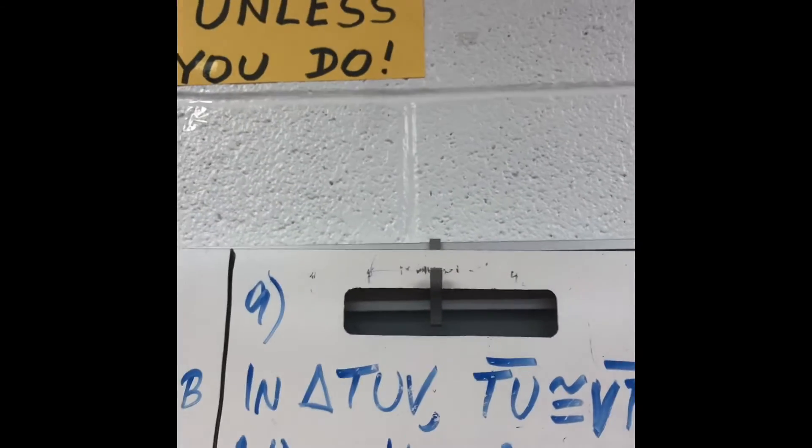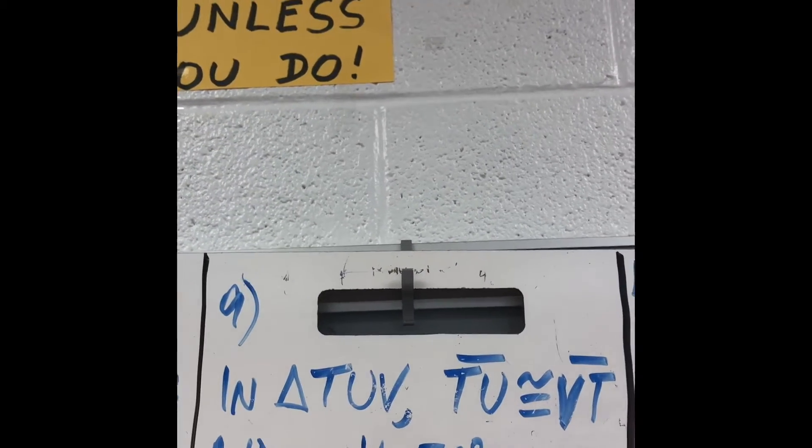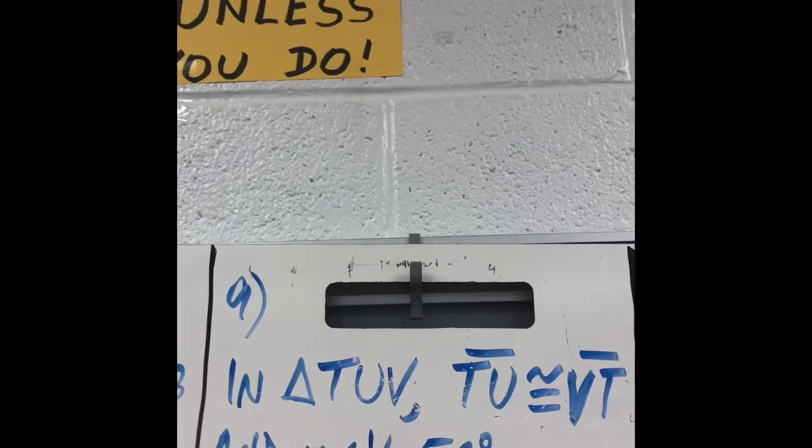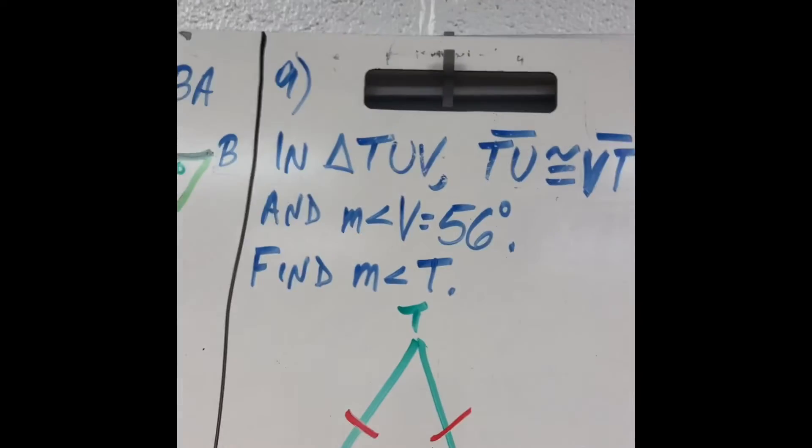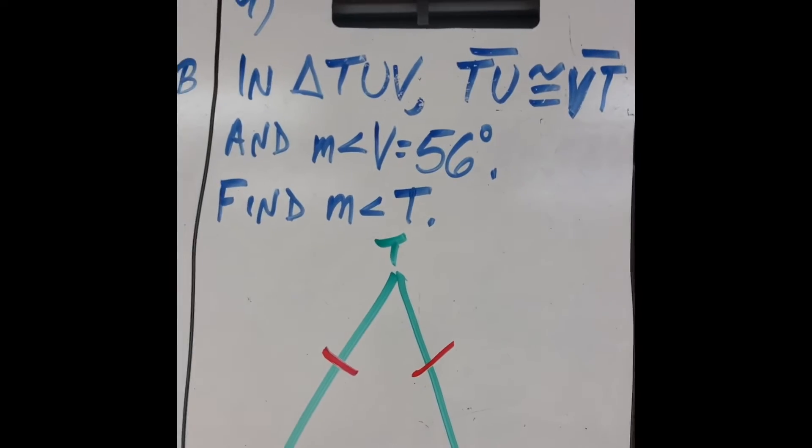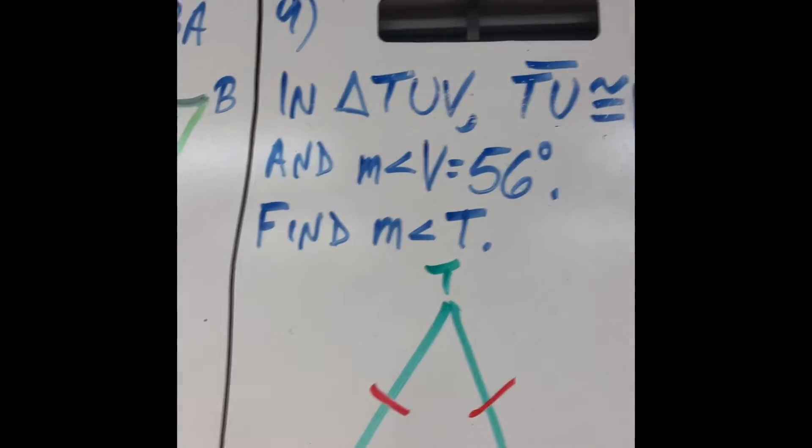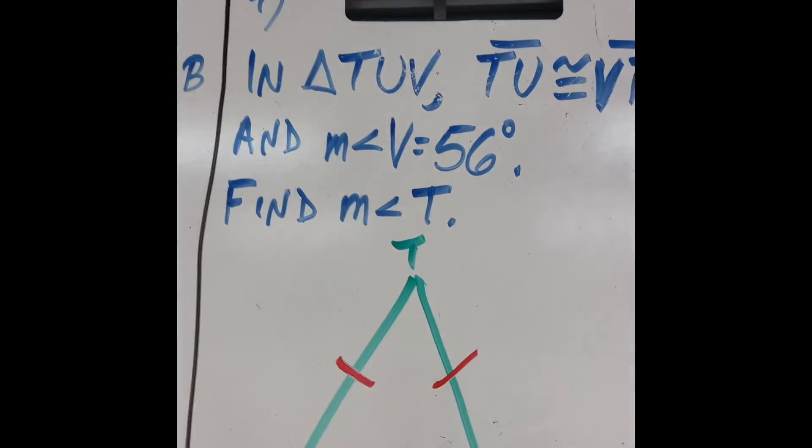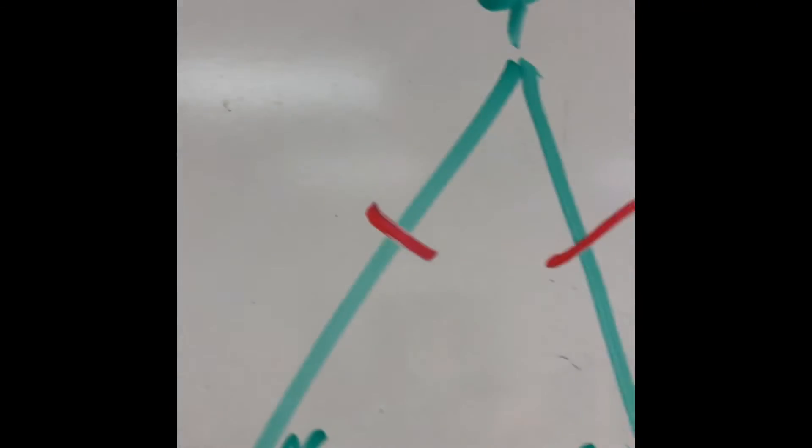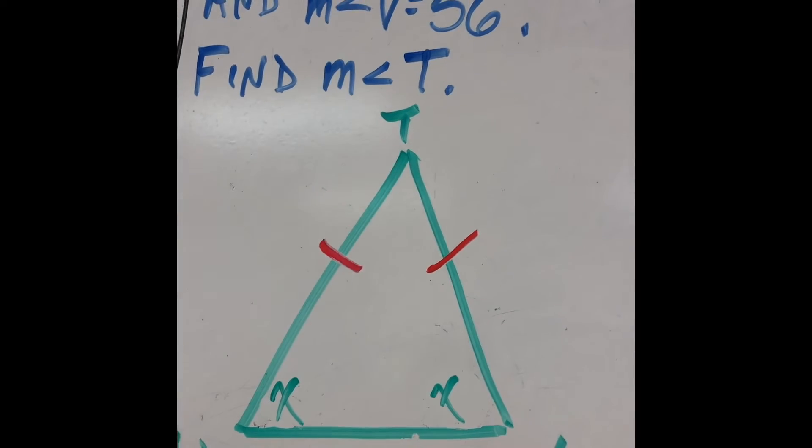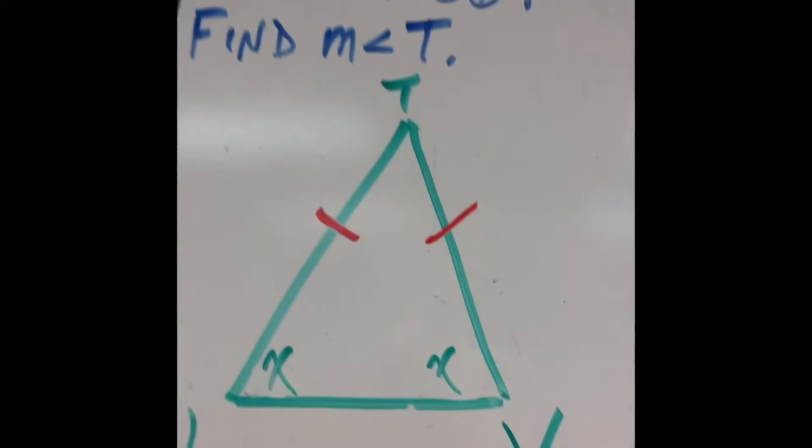Over here, they give you a problem and no picture. Oh no, I have to draw a picture. Okay, draw it. I draw a picture. It says TU is equal to VT. So I draw that. It means these bottom angles are equal, right? It means this is x. This is x, right?